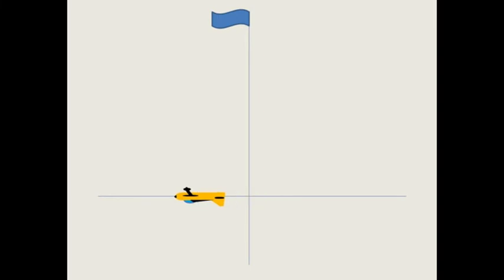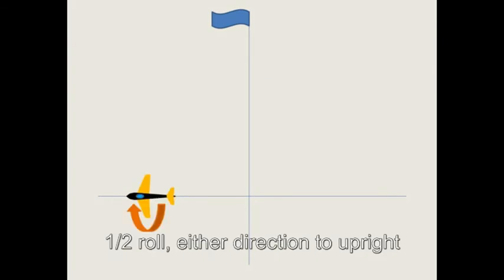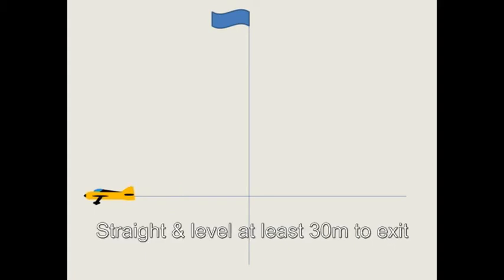One thousand, two thousand, three thousand. Then perform a half roll in either direction, back to upright. And fly straight and level for at least 30 metres to exit.